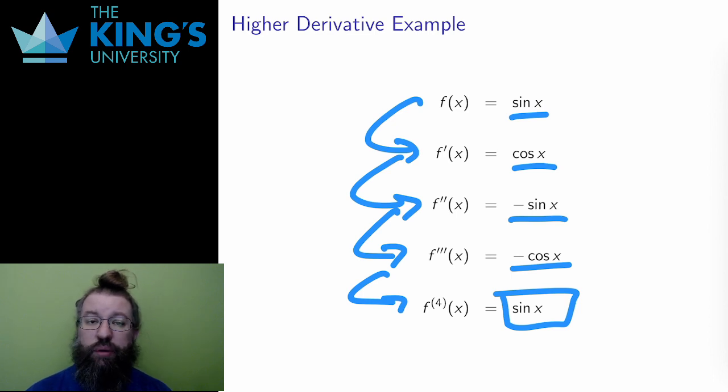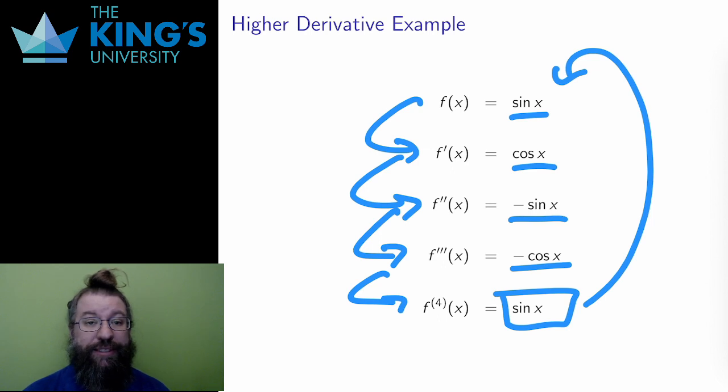And there are two things to point out. First, this is a loop. After four derivatives, I get back to sine. The halfway part of the loop is also interesting. After two derivatives, I get back sine again, but with a negative in front of it.